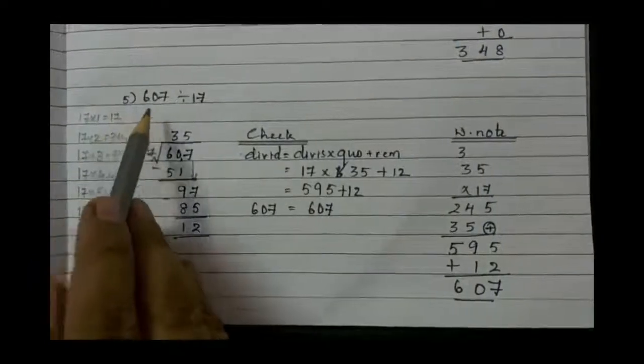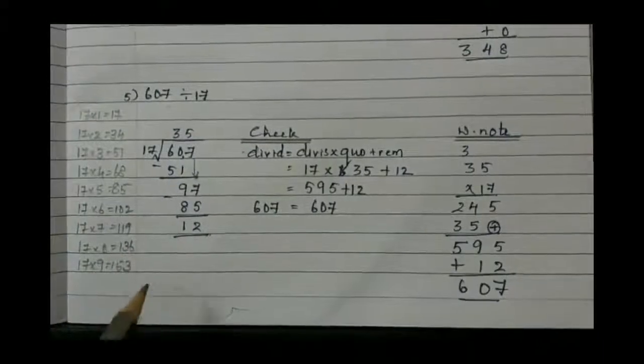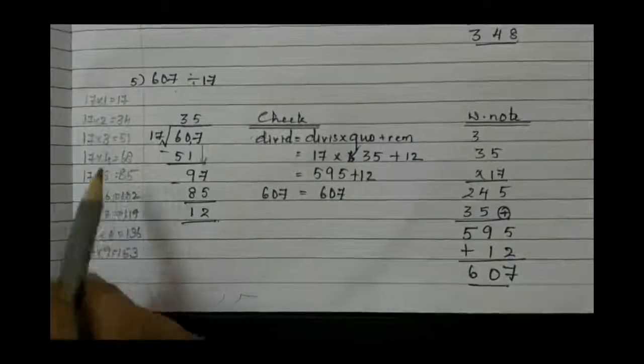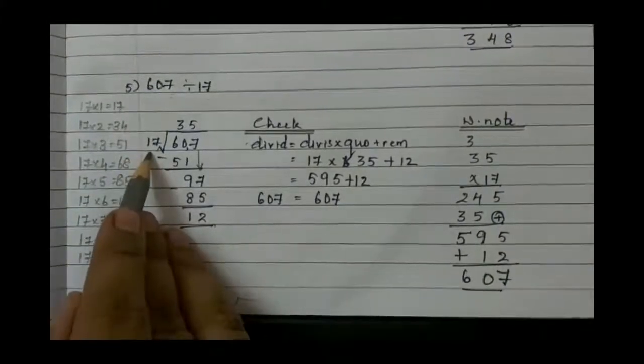Question number 5: 607 divided by 17. Children, you should learn the tables thoroughly, you should know at least till 20. So let us solve 17 divided by, sorry, 607 divided by 17.